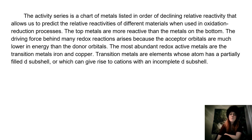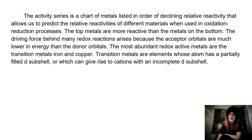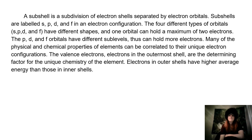The most abundant redox active metals are the transition metals, iron and copper. Transition metals are elements whose atom has a partially filled D subshell, or which can give rise to cations with an incomplete D subshell. A subshell is a subdivision of electron shells separated by electron orbitals. Subshells are labeled S, P, D, and F in an electron configuration.